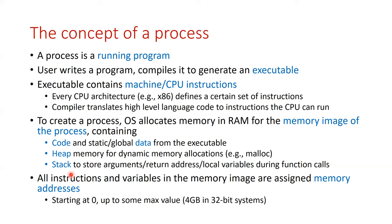All components in the memory image are assigned addresses. For example, the code starts at byte 0, the heap at byte 100, the stack at byte 200, and so on. These addresses start at zero and can go up to the maximum value supported by the architecture — in 32-bit systems, a 32-bit address can go up to four gigabytes.